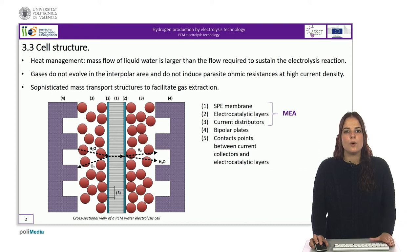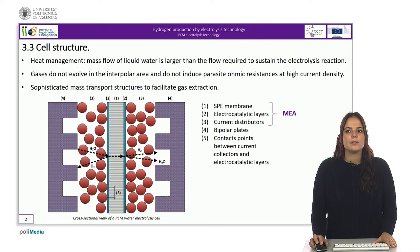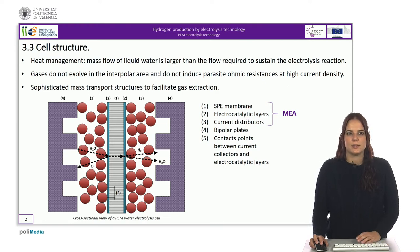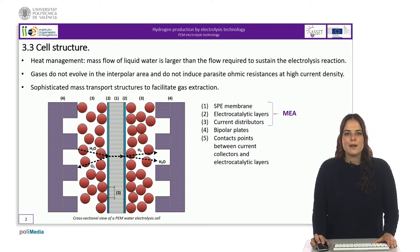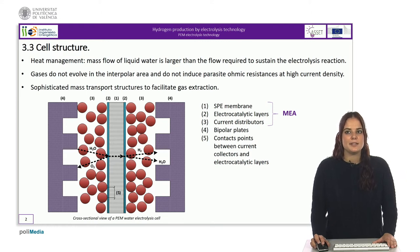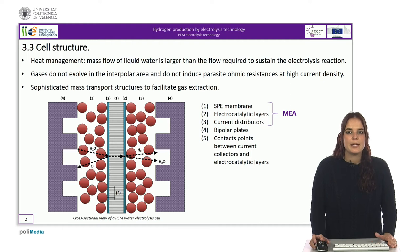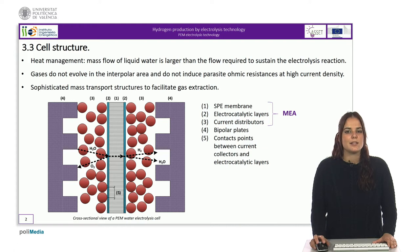Besides that, two hollow bipolar plates, number 4, are used to convey electric current to the cell and separate two adjacent cells. Channels are used to carry feed water to the anode and to collect liquid-gas mixtures in each cell compartment. Number 5 shows the contact point between current collectors and electrocatalyst layers, which are critical. The average distance between contact points must be sufficiently small — typically several micrometers — to obtain a good distribution of current lines at interfaces.